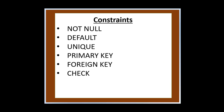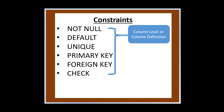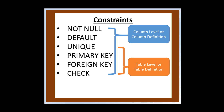Here are some common constraints. In APEX, NOT NULL, DEFAULT, UNIQUE, PRIMARY KEY, FOREIGN KEY, and CHECK can be declared at the column definition. UNIQUE, PRIMARY KEY, FOREIGN KEY, and CHECK can also be declared after all column definitions at the table level.